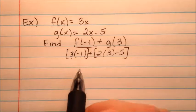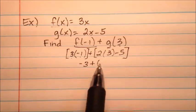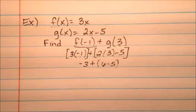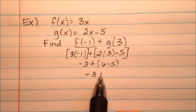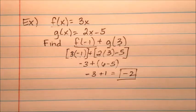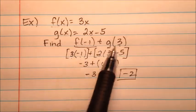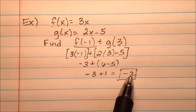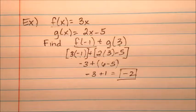So 3 times negative 1 will be negative 3 plus, and we have 2 times 3 is 6 minus 5. So negative 3 plus 1 will be negative 2. We can say this operation with functions f at negative 1 plus g at 3 is going to be negative 2 when we simplify that.